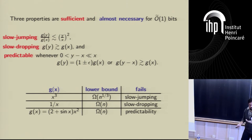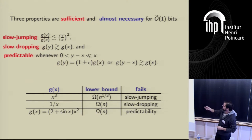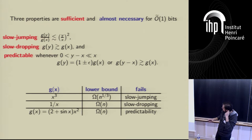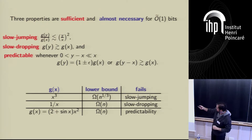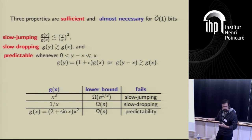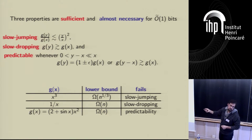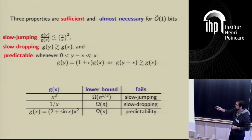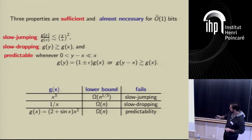That's about streaming sums: three properties that characterize almost all functions. About any function you can come up with, it's going to be polylogarithmic space approximable if and only if it satisfies all three conditions. Lower bounds come from standard reductions to communication complexity problems like multiparty disjointness and index.